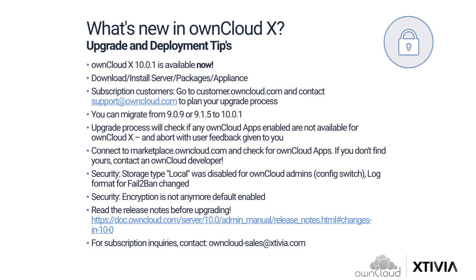Let's move over to upgrade and deployment tips. OwnCloud 10 Enterprise Edition is out. Users still on OwnCloud 9 can reach out to OwnCloud directly for assistance planning the upgrade process. People can migrate from versions 9.0.9 or 9.1.5 directly to 10.0.1. If you have any apps not compatible with OwnCloud 10, the upgrade process will abort and give you feedback regarding those apps, so check the marketplace first. Read the release notes before upgrading to OwnCloud 10. And if you have any subscription inquiries, feel free to reach out to Xtivia — OwnCloud-Sales at Xtivia.com is one easy way to reach out.